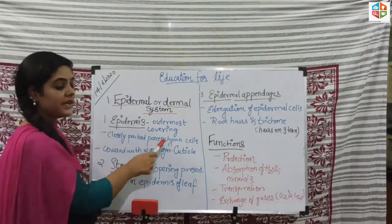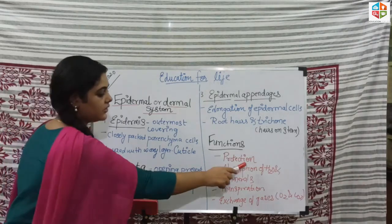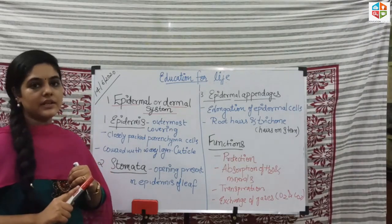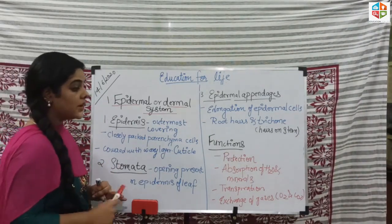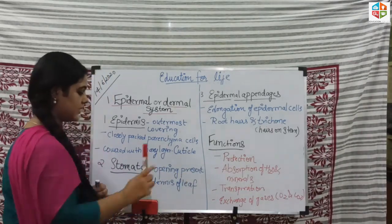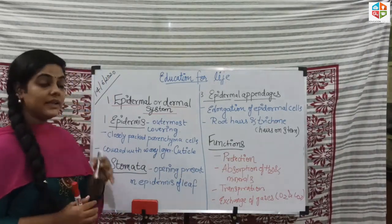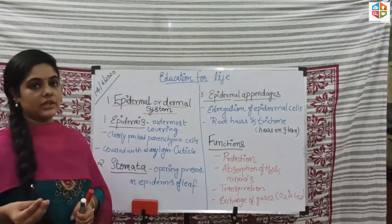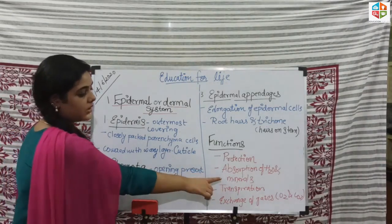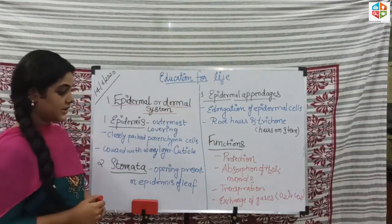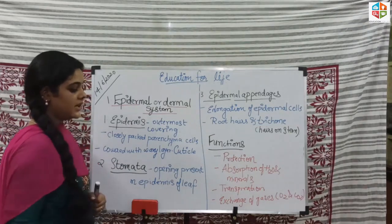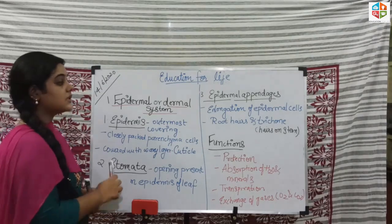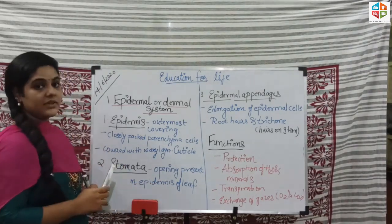Now the functions of the epidermal system. First, the epidermis performs the function of protection from the outer surroundings — protection of the plant is done by the epidermis. Second, absorption of water and minerals, which is done by the epidermal appendages, specifically root hairs. Third, transpiration and exchange of gases, which is performed by the stomata.